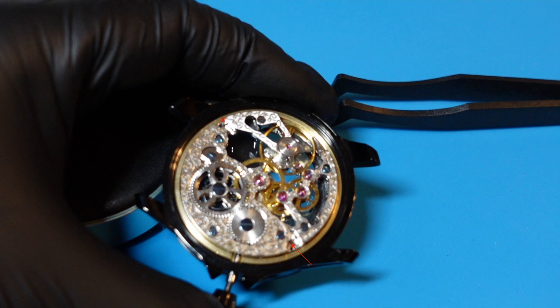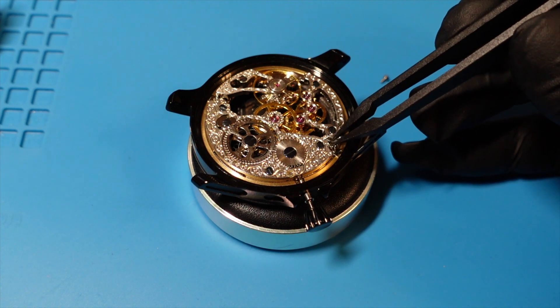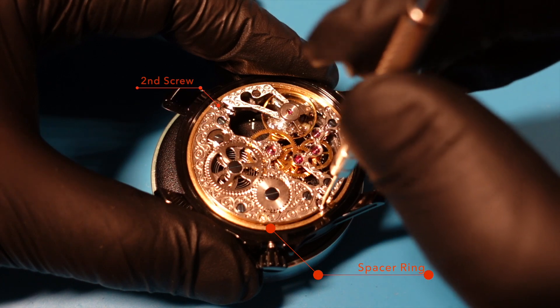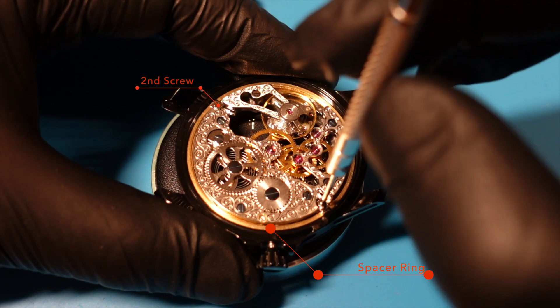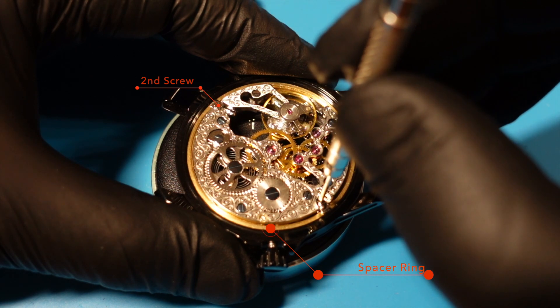We are ready to secure the movement to the spacer ring by installing the movement holder clamps. As you see, I try to never use metal tweezers to handle parts to reduce the risk of scratches. Now, I am putting the screws in place.